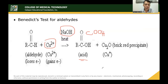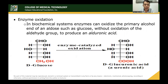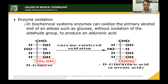Another type of oxidation to acidic sugar is enzyme oxidation. In biological systems, enzymes can oxidize the primary alcohol end (CH2OH) of an aldose such as glucose without oxidizing the aldehyde group, producing an alduronic acid. In this enzyme-catalyzed oxidation, the CH2OH group is oxidized by the enzyme to become COOH, forming a uronic acid.